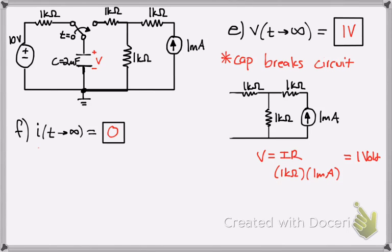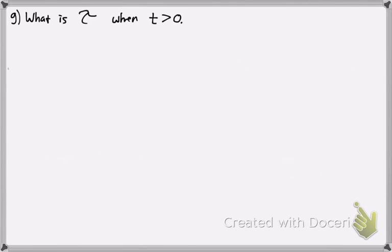What happened to the current? Since it's an open circuit, there's no more current through the capacitor, even though there is a voltage — but that's just what happens. So that's how you find the voltage and the current as time goes to infinity.